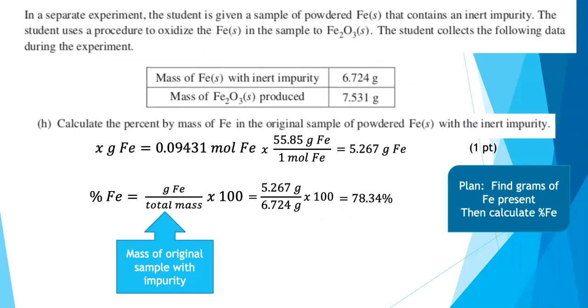The next thing we're asked to do is to find the percent by mass of iron in the original sample of the original powdered sample that we had. And apparently I forgot to do the animations on this slide. Oh, well, we're going to just run with it. My plan is I'm going to find the grams of iron present and then use that to find the percent iron by dividing by the original mass. So since I just, in the previous problem, found the moles of iron, if I use the molar mass of iron, I can calculate grams of iron, which turns out to be 5.267 grams. And then to find the percent of iron in that original sample, I'm going to take the grams of iron that I just calculated, divide it by the total mass of that original sample with the impurity, multiply it by a hundred because it's a percent. I get 78.34%. So some of the other sample was other stuff.